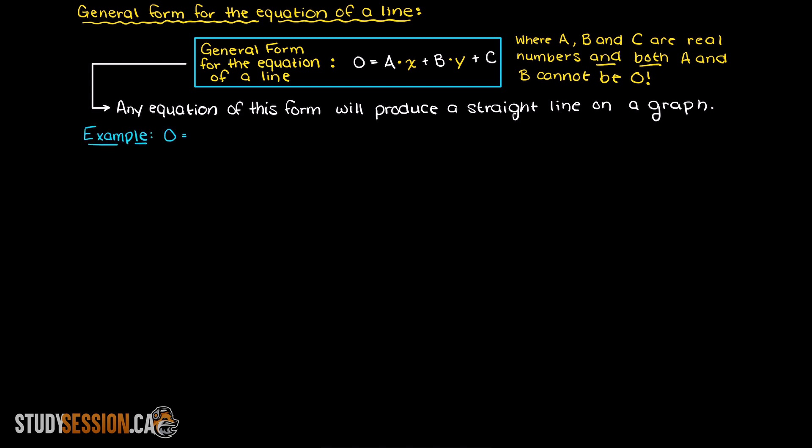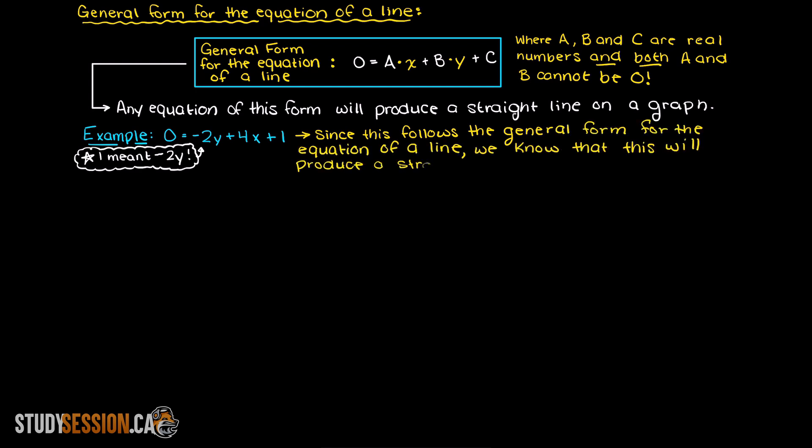So let's say that we were given this equation here, 4x plus 2y plus 1 equals zero. We know immediately that this function is going to produce a straight line since it follows our general form for the equation of a line.